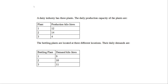The problem is: a dairy industry has three plants. The daily production capacity of the plants are plant number one 12 kilolitres, plant number two 14 kilolitres, and plant number three 4 kilolitres. The bottling plants are located at three different locations. Their daily demands are bottling plant number one 9 kilolitres, bottling plant number two 10 kilolitres, and bottling plant number three 11 kilolitres.